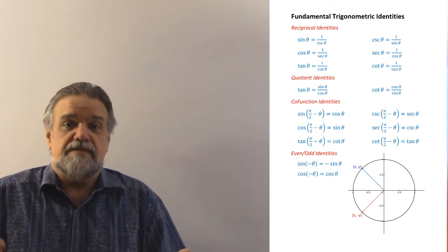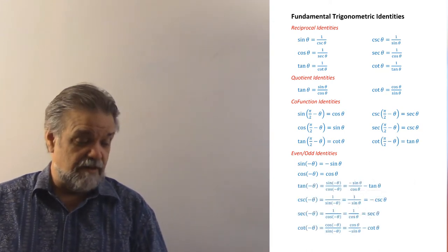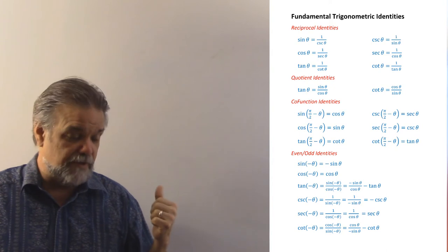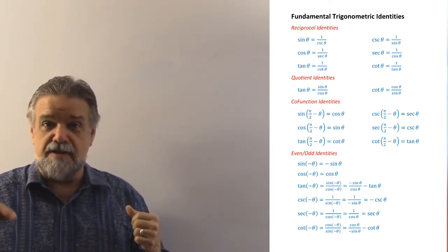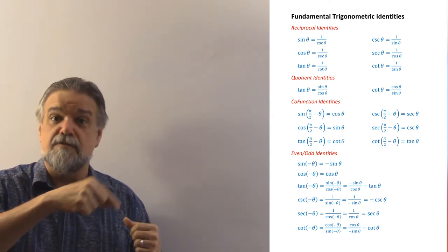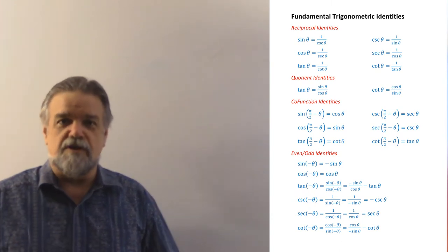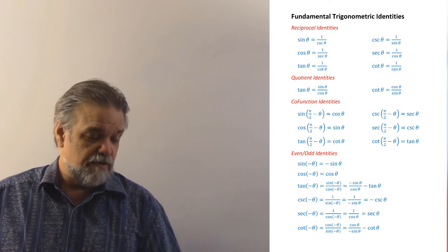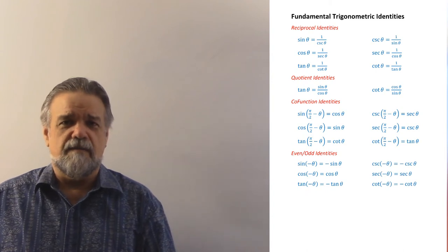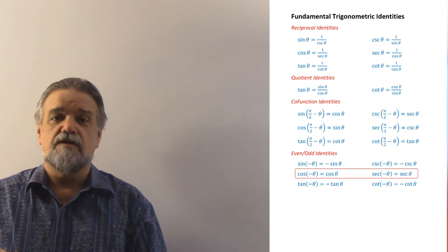What about tangent, cosecant, secant, and cotangent? Using the quotient and reciprocal identities, the tangent of negative theta is the sine of negative theta over the cosine of negative theta, which is the negative sine of theta over the cosine of theta — so tangent is odd. You can go through and show that all the others are odd or even. Four of them are odd and two are even, and the two even ones are cosine and secant.